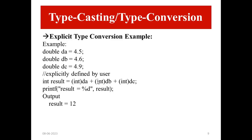Let's see an example of explicit type conversion. In this example, we have declared three variables of double type: value 4.5 is assigned to da, value 4.6 is assigned to db, and value 4.9 is assigned to dc. After that, we declared one integer type variable for output that holds the sum of da, db, and dc. We have to convert da, db, and dc into int using the explicit cast syntax: first the data type, then the name of the variable. Then use printf to display the result.